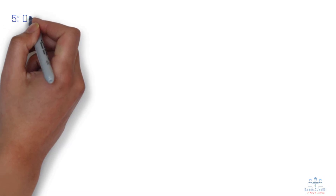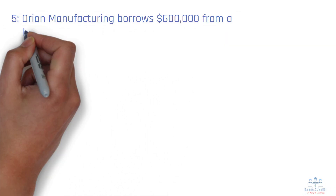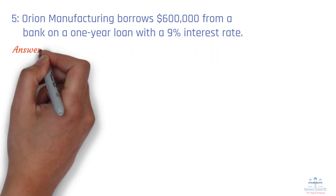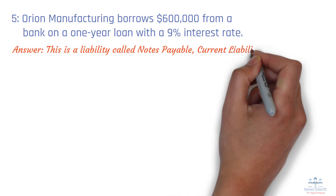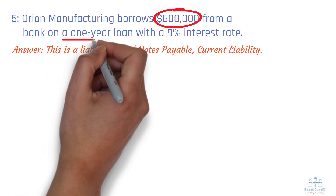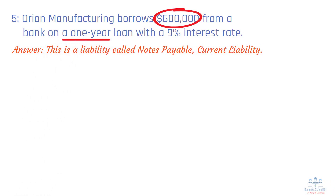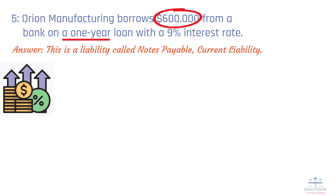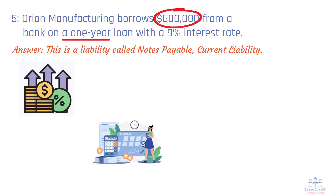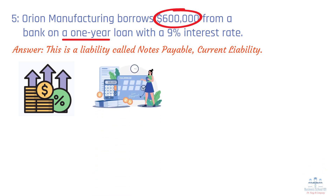Scenario 5: Orion Manufacturing borrows $600,000 from a bank on a one-year loan with a 9% interest rate. Answer: This is a liability called notes payable, a current liability. The company has received the benefit of $600,000 in cash, creating a legal obligation to repay the loan. The amount is clearly defined, and repayment is due within a year, making it a short-term liability. However, the interest on the loan is not yet a liability — interest becomes a liability only as it accrues over time. Right now, the company could repay the principal immediately without additional charges.